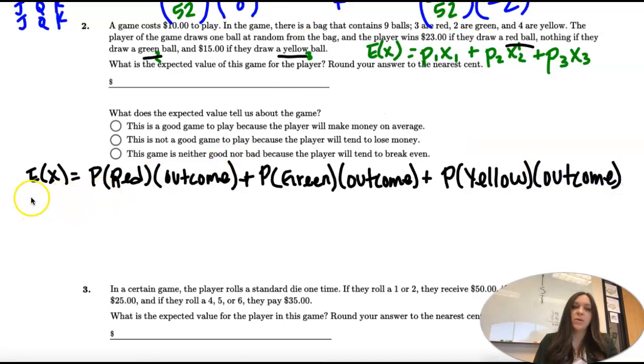Let's think about what those are. How many balls total? Nine. Out of nine balls, how many are red? Three.